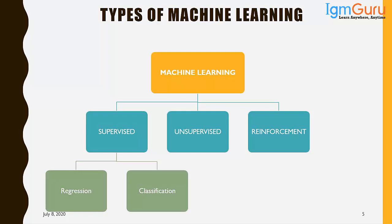Some examples of reinforcement learning include self-driving cars. Within supervised learning, there is another classification: regression-based and classification-based. This is purely based on the response variable. If you have a continuous response variable you apply regression techniques; if you have a discrete response variable — such as yes or no — you apply classification.